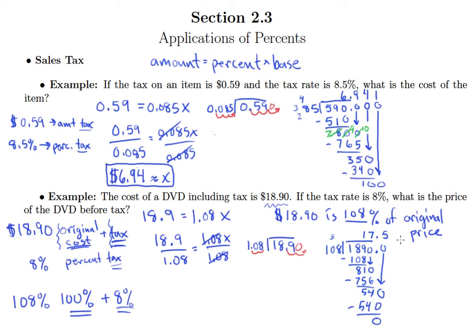So no rounding necessary here, we get 17.5 for our x. But please don't leave the answer like this, 17.5. Remember this was a dollar amount, so this means that the DVD cost $17.50 before tax.